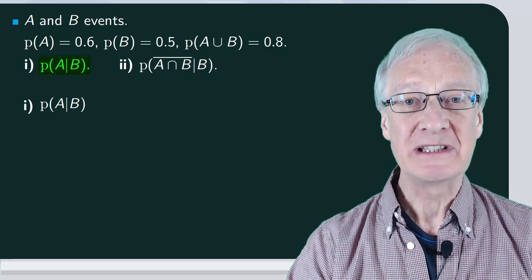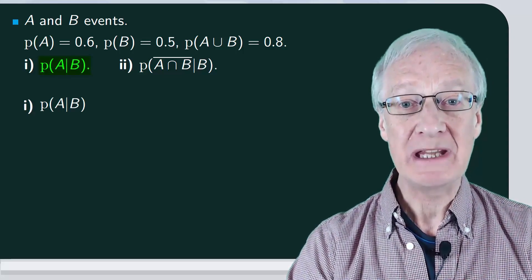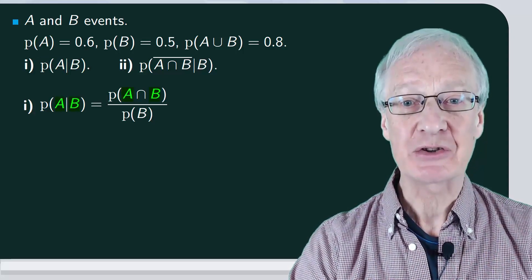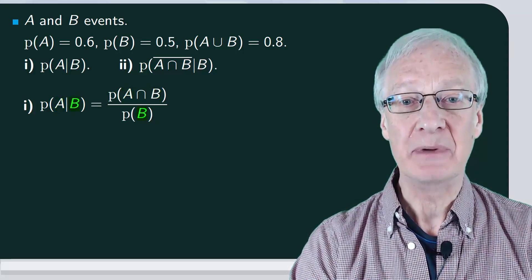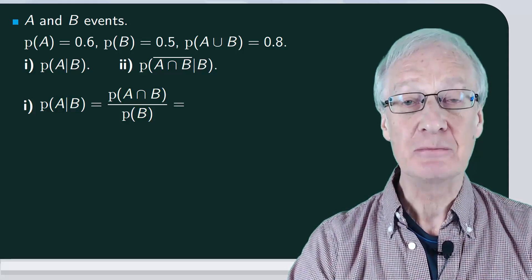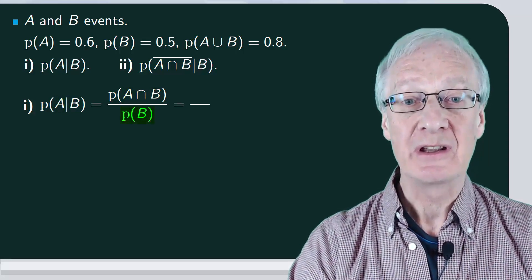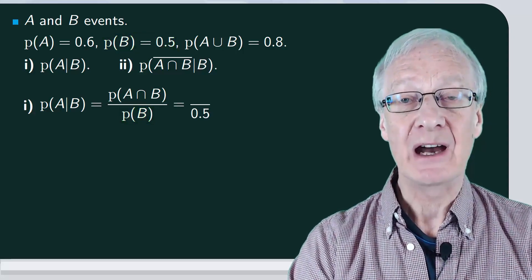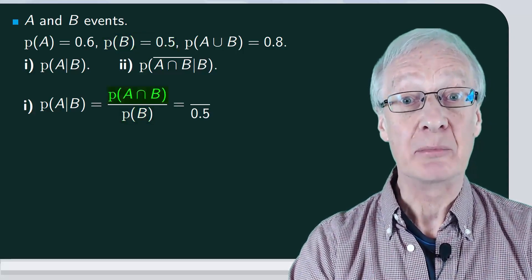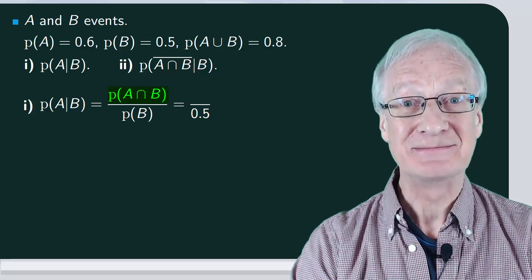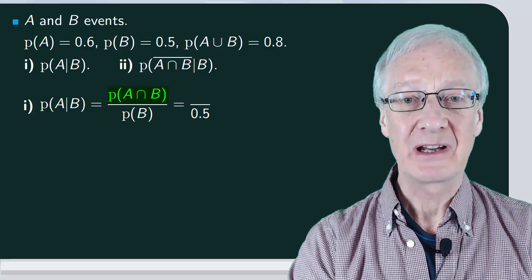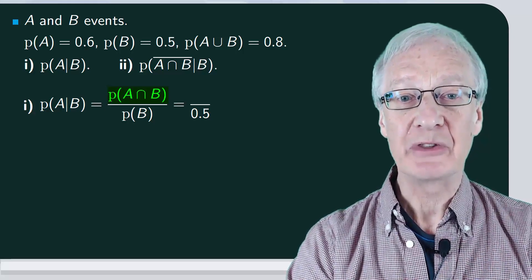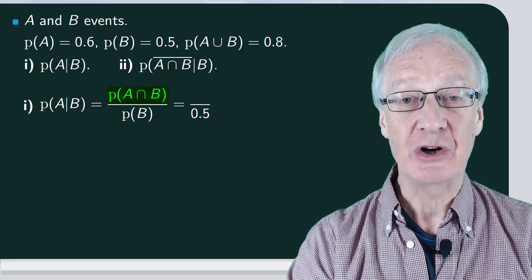First, the probability of A conditional on B, by definition, is the probability of the intersection divided by the probability of B. The probability of B is 0.5, and now we need to find the probability of A intersection B. To calculate this, we write the formula that relates the probability of the union and the intersection of events.